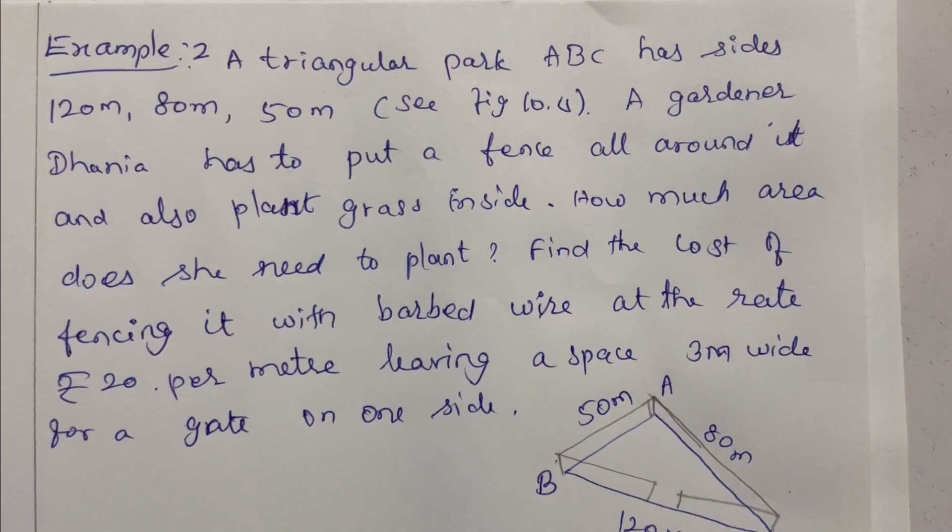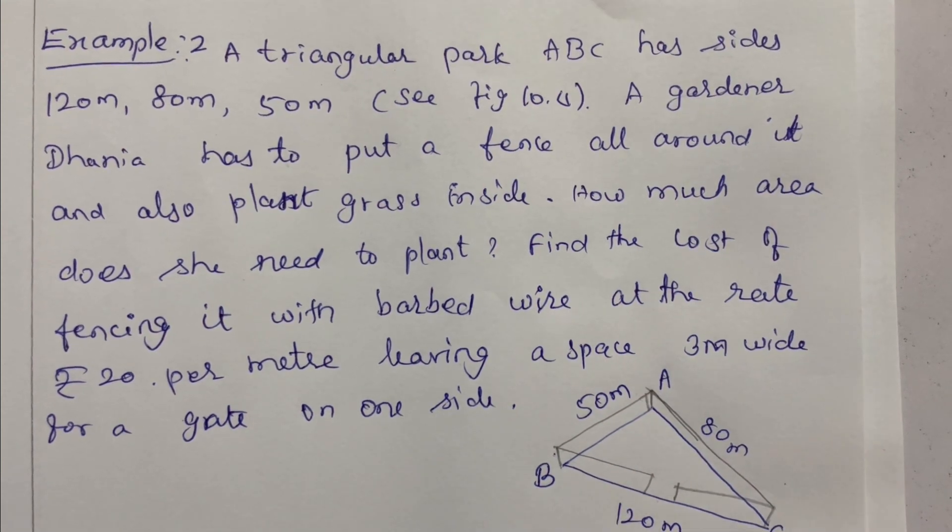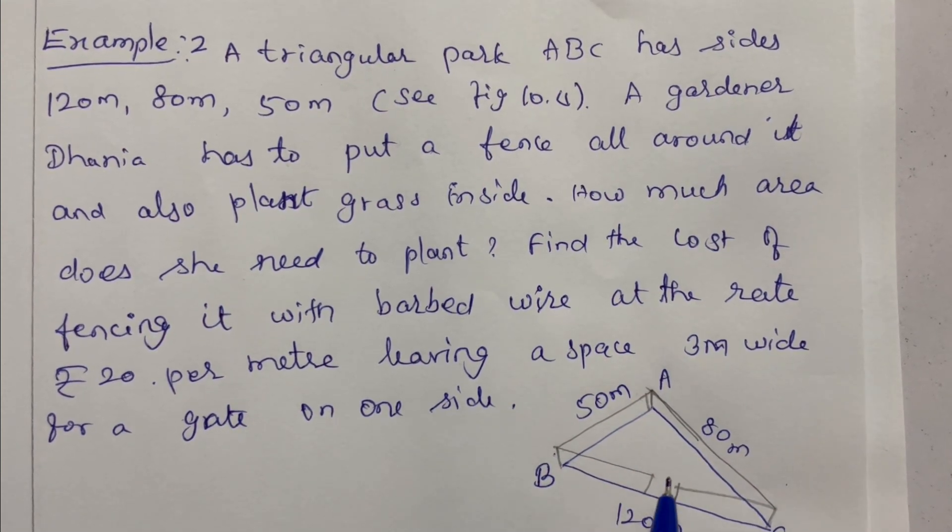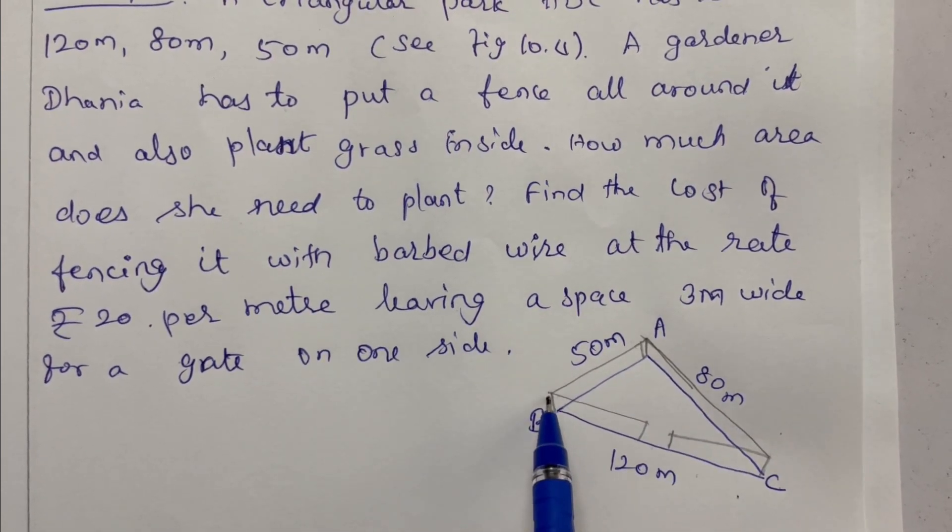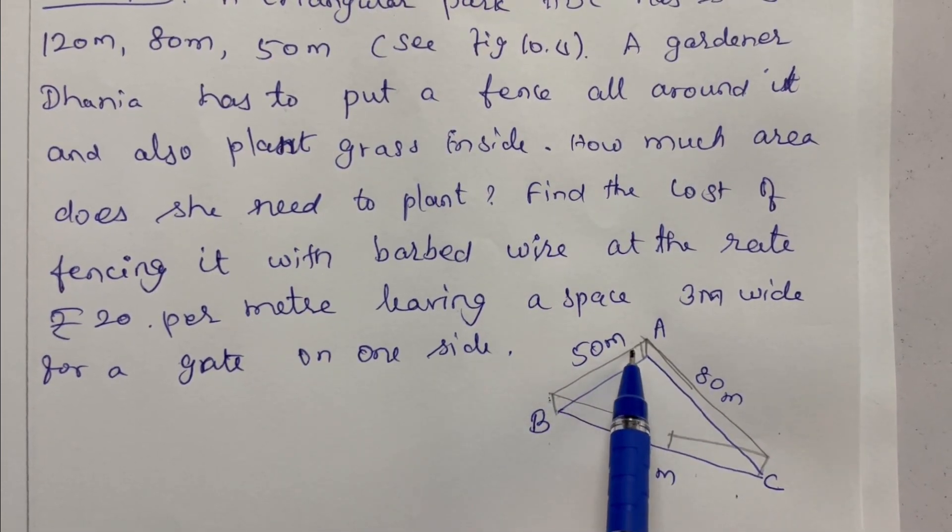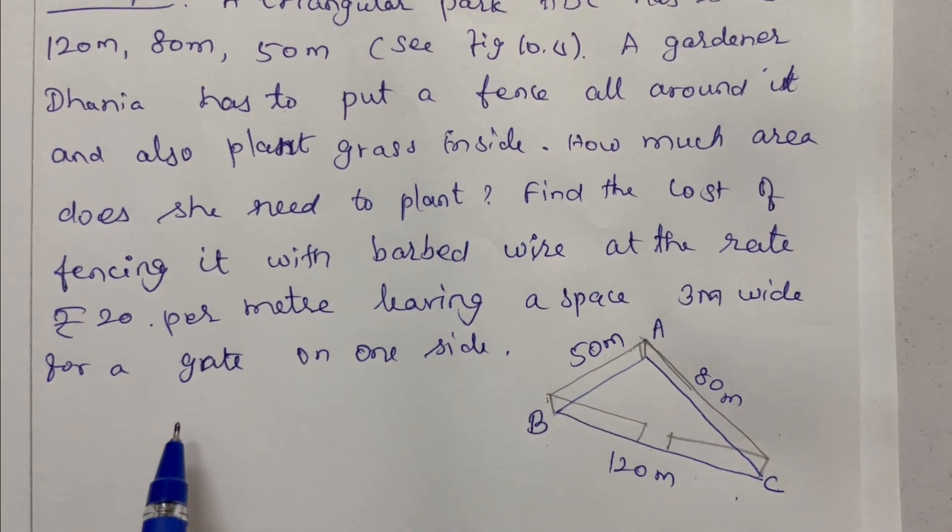Example 2: A triangular park ABC has sides 120 meter, 80 meter, and 50 meter. A gardener Dhania has to put a fence all around it and also plant grass inside.